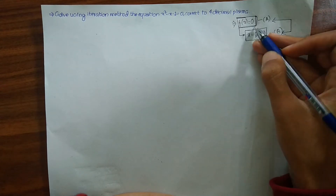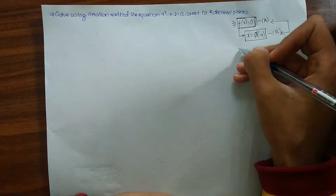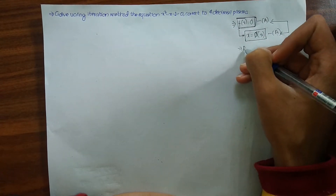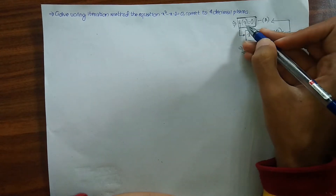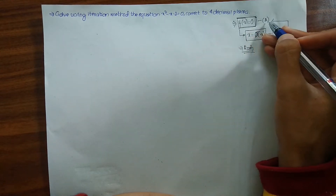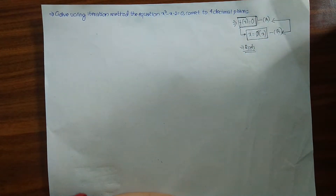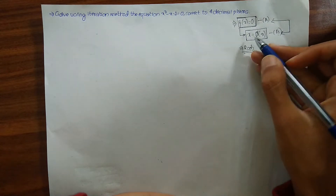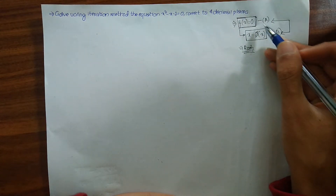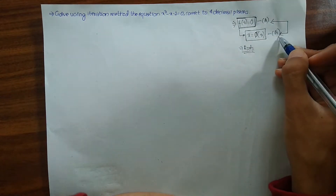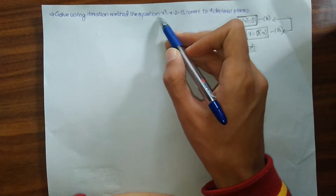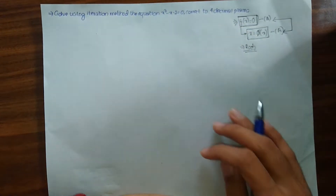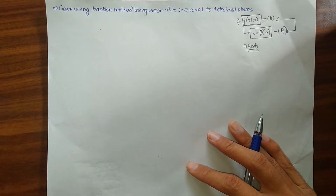The intersection of curves (a) and (b) will simply give the roots of equation (a). So first we have equation (a), we rewrite it in the form x = φ(x), and the intersection of those two curves gives our required root. That's how we use the iteration method.